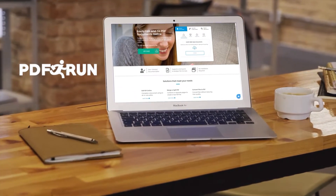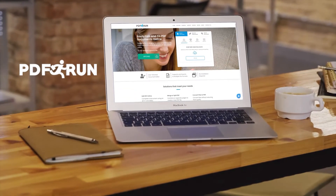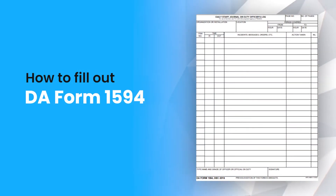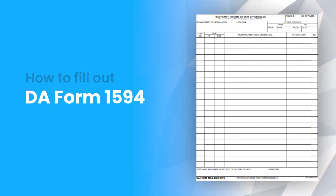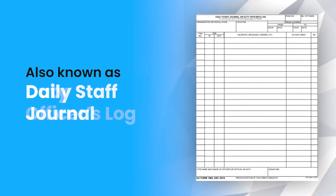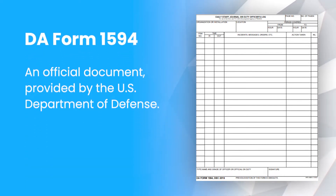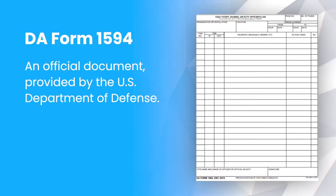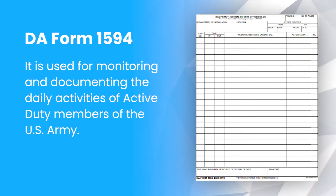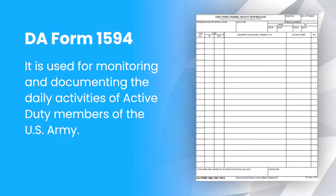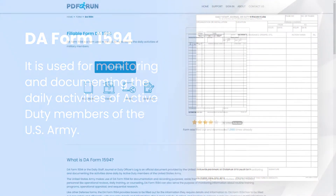Welcome to PDF Run. In this video, we'll guide you on how to fill out DA Form 1594. DA Form 1594, or the Daily Staff Journal or Duty Officers Log, is an official document provided by the United States Department of Defense. It is used for monitoring and documenting the daily activities of active duty members of the United States Army.